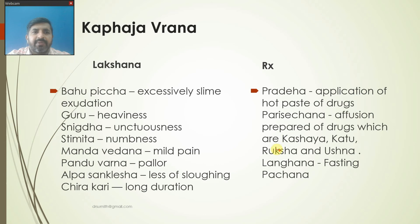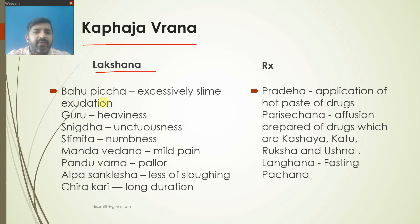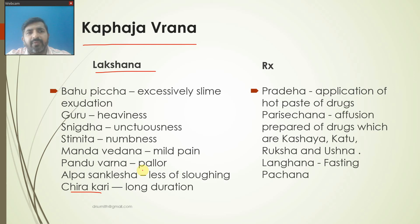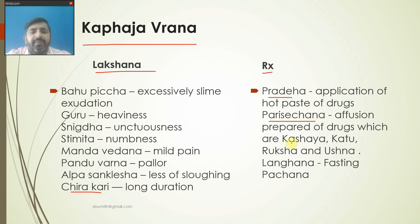The last type of Nija ulcer is Kaphaja Vrana, where Lakshanas like Bahupiccha, Guru, Snigdha, Shimita, Manda Vedana, Pandu Varna, Alpa Sanklesha or less sloughing, and Chirakari (long duration of ulcer) can be seen. Treatment includes Pradeha - application of hot paste - Parishek as affusion therapy, especially with Kashaya, Katu, Ruksha, Ushna Dravyas. Langhana and Kshar can also be advised in Kaphaja Vrana.